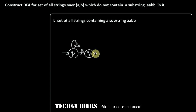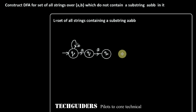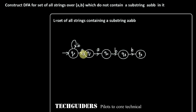If this A is followed by another A, it moves to another state Q2, which remembers that AA of the substring AABB is already seen. From Q2, if it sees a B, it moves to state Q3, which remembers that AAB is seen. From Q3, if it sees a B, it moves to state Q4, which remembers that the string already contains the substring AABB. This state Q4 should be the final state.